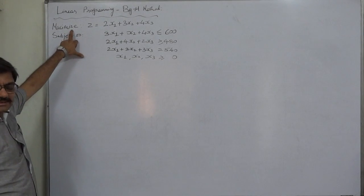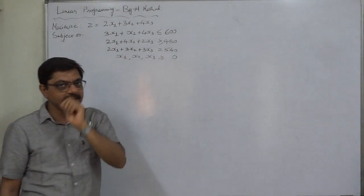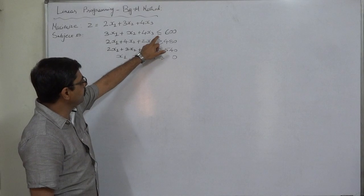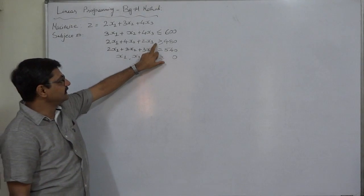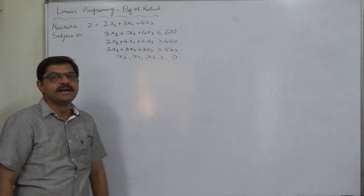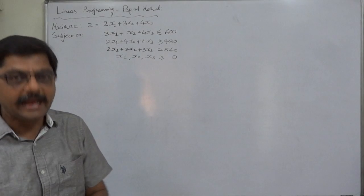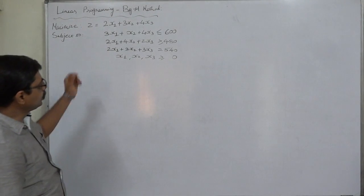The first is less than or equal to, which directly matches maximization objective, but second is greater than or equal to and the last is equals to, so we have to use big M method. That is point number one.